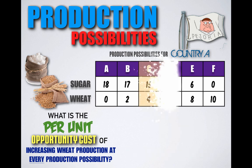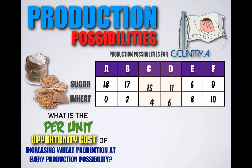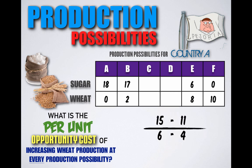In shifting production from combination C to combination D, Petoria would decrease sugar production from 15 units to 11 units but increase wheat production from four units to six units. In losing four units of sugar but gaining two units of wheat, Petoria gives up the potential to produce two units of sugar per unit of wheat gained.